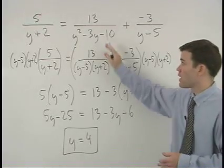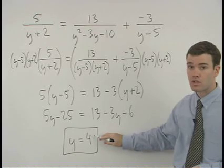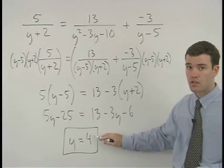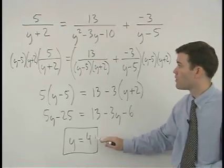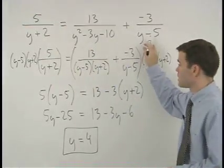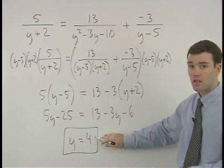If it does make a denominator equal to zero, then four cannot be a solution to the equation, so the answer would be the null set. Fortunately, in this problem it does not make any of the denominators equal to zero, so four is an acceptable answer.